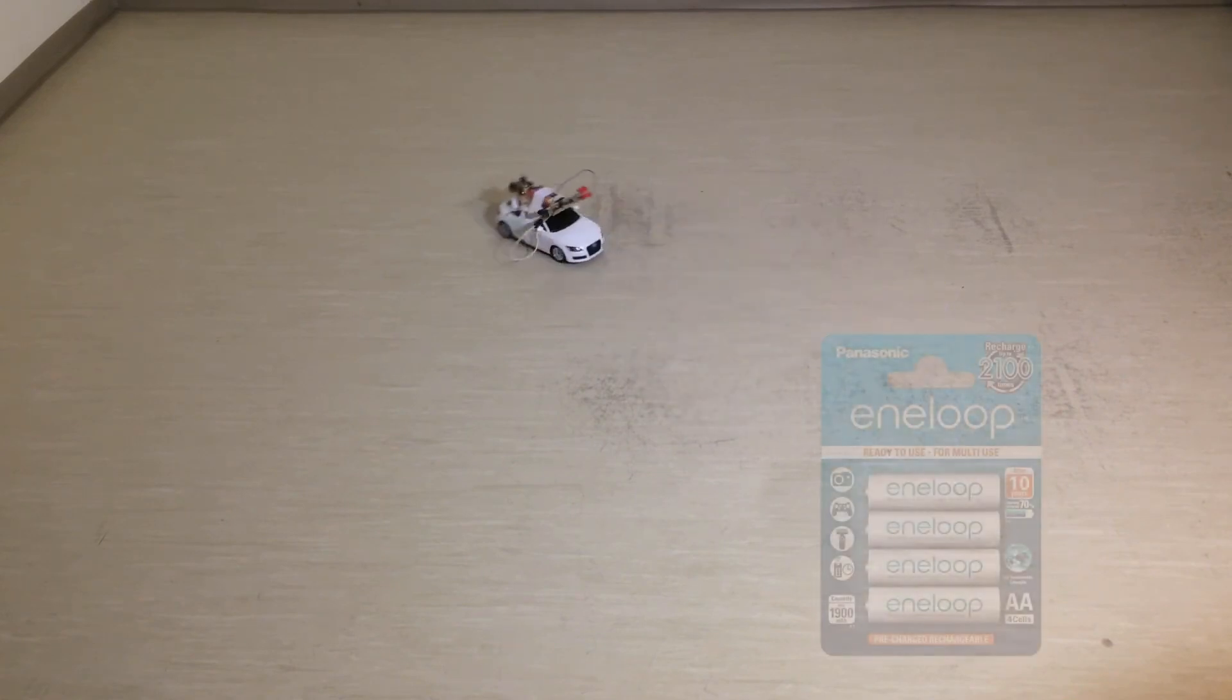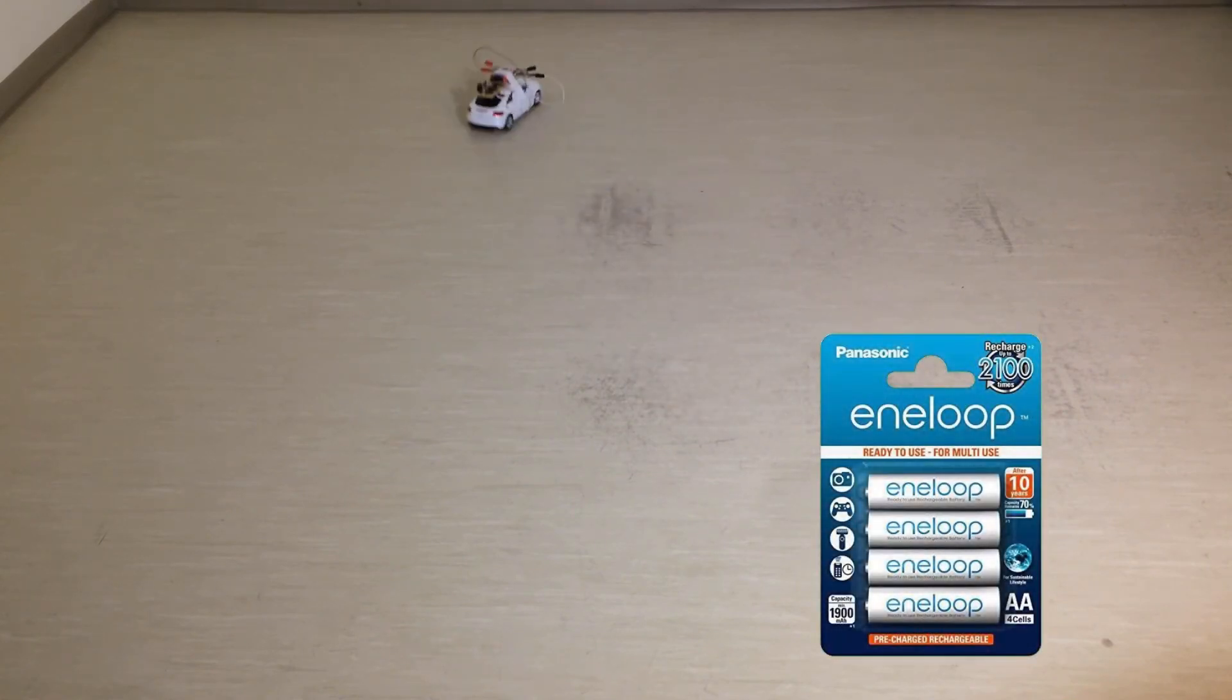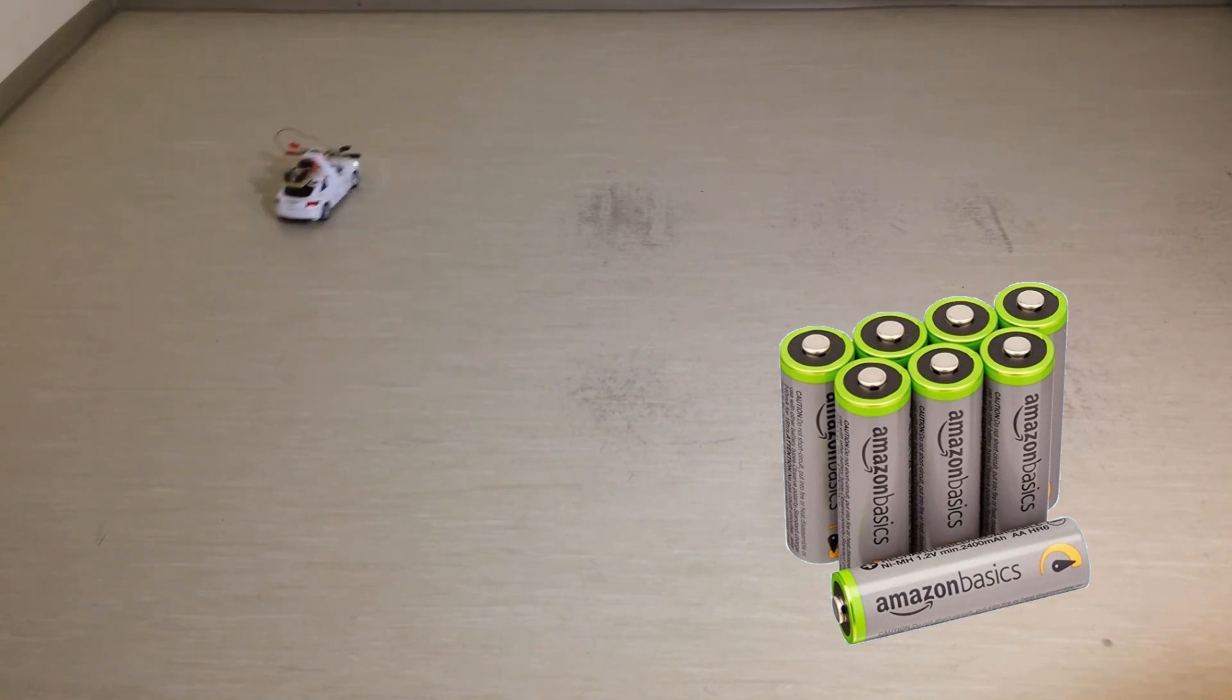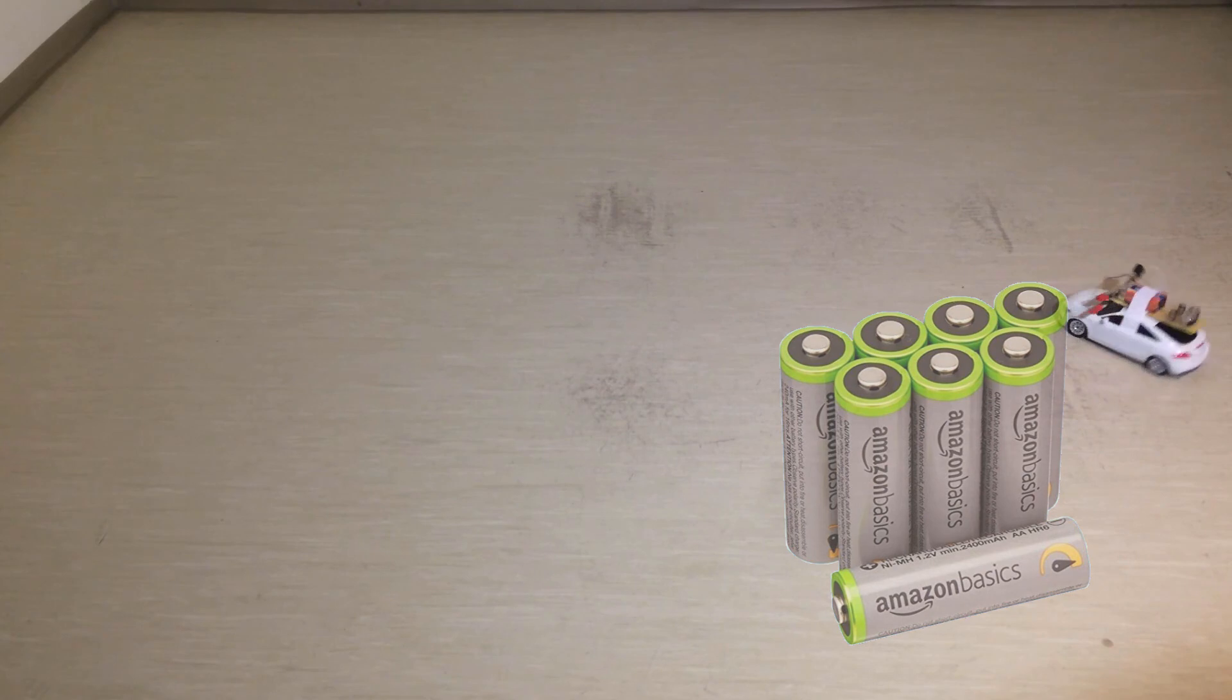I did some research and there is one brand that really sticks out, and those are the Eneloops. Although it looks like they are the best that are out there at the moment, they are a bit pricey, so I looked for some alternatives. One of them that seemed to be worth the price are Amazon Basics. Although they don't perform as well as Eneloops, it looked like they would do the work. I am still deciding which ones to choose, so in case you have any experience with either of these, leave a comment and share your experience.